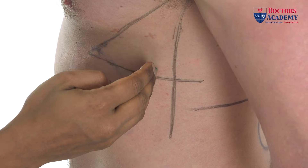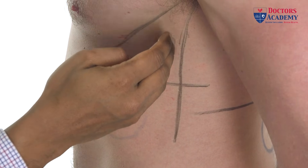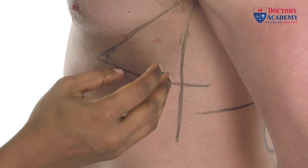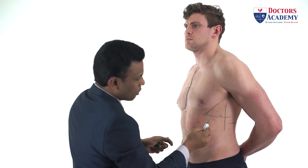Likewise, if you go too high up, the risk of damage to the long thoracic nerve increases. This is why this is an area of compromise — a safe area to position a chest drain.